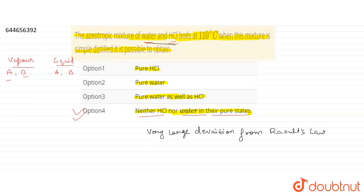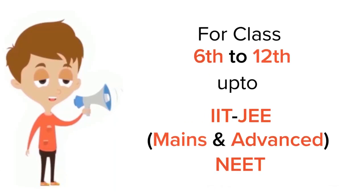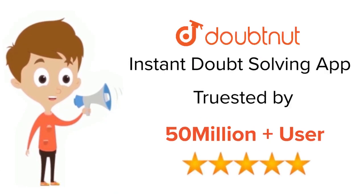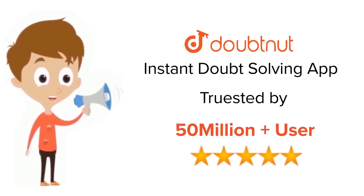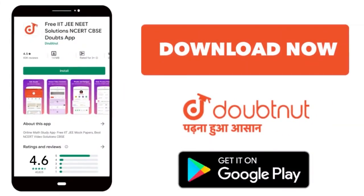This is a very basic, rememberable question — you have to remember these points. I hope you guys understand it. For Class 6 to 12, IIT JEE and NEET level, trusted by more than 5 crore students. Download DoubtNet app today.